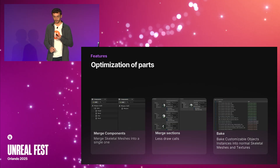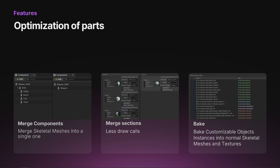In addition to mesh and texture operations, Mutable also supports optimizations such as merging skeletal mesh components into a single one, merging skeletal mesh sections with automatic texture packing, and baking customizable object instances into normal static skeletal meshes and textures.